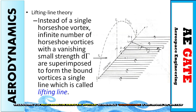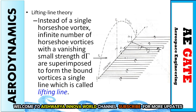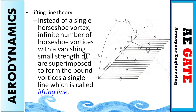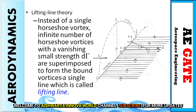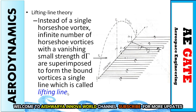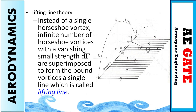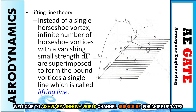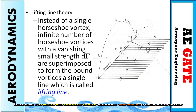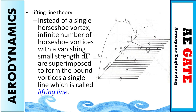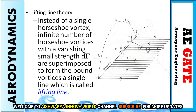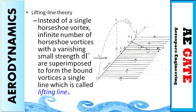Considering an infinite number of horseshoe vortices, each of small strength d-gamma, these are superimposed such that the bound vortices form a single line called the lifting line. Each individual vortex has a small change in strength, but collectively they are treated as a single vortex whose strength remains constant throughout the filament. This is what is meant by lifting line theory.